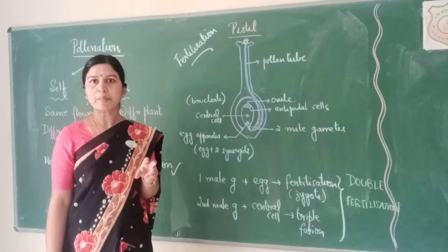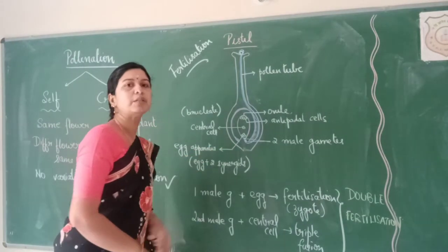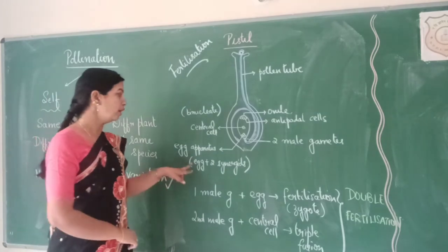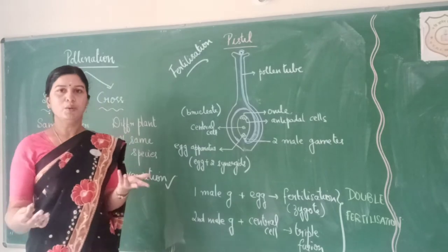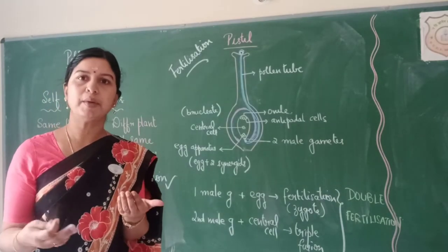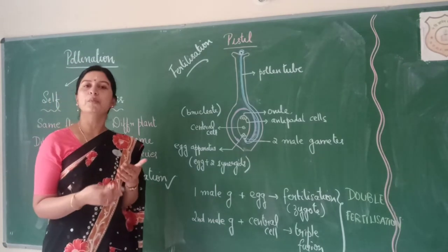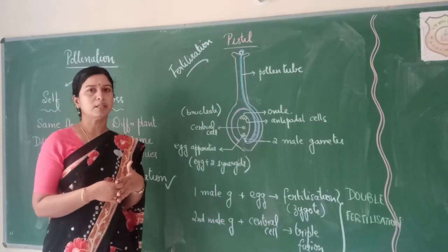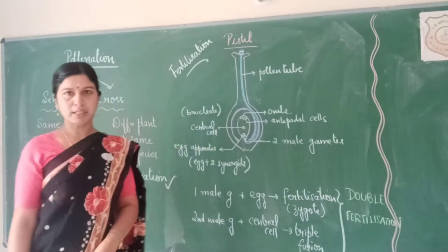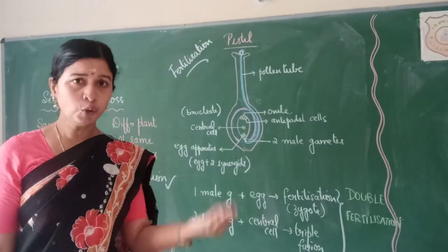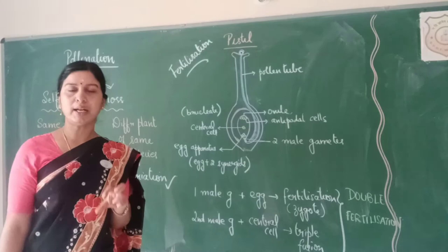The pollen tube grows into the ovule and releases two male gametes. One of these male gametes will fuse with the egg cell, and this is termed as fertilization. The male gamete is the sperm and the female gamete is the egg; they fuse to form the zygote. So one male gamete released by the pollen tube fuses with the egg cell to form the zygote — this is fertilization.